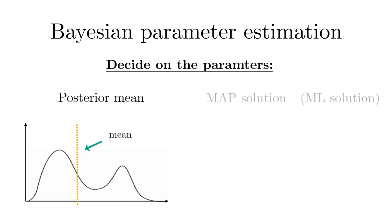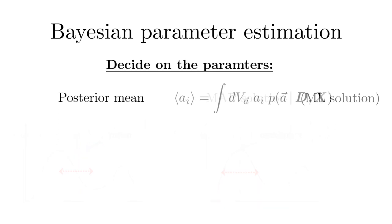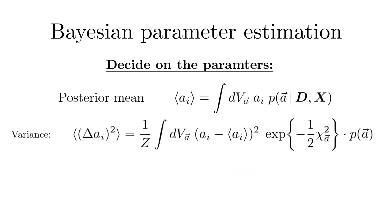It cannot be overstressed that a single value for the parameters, be it given by the MAP or the mean, is meaningless if we do not know the uncertainty. The uncertainty can be quantified by the variance. In many cases, also the covariance is of great interest.